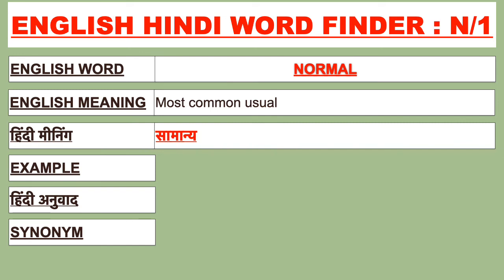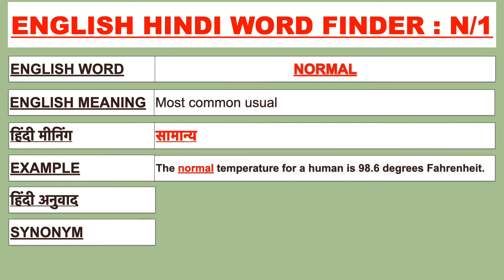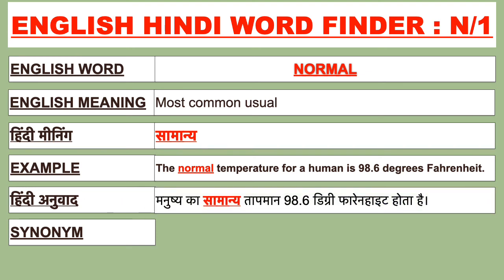For example, the normal temperature for a human is 98.6 degrees Fahrenheit. Isay Hindi mein bolenge: Manushya ka samanya tapman 98.6 degrees Fahrenheit hota hai.